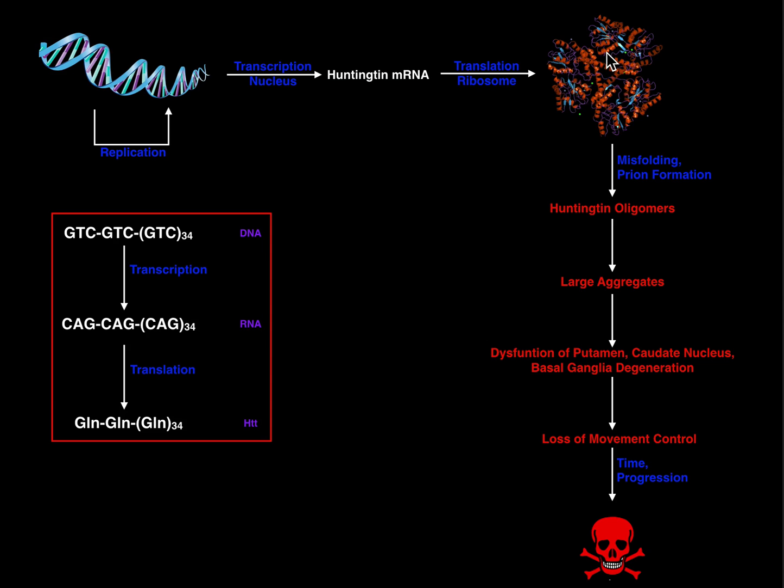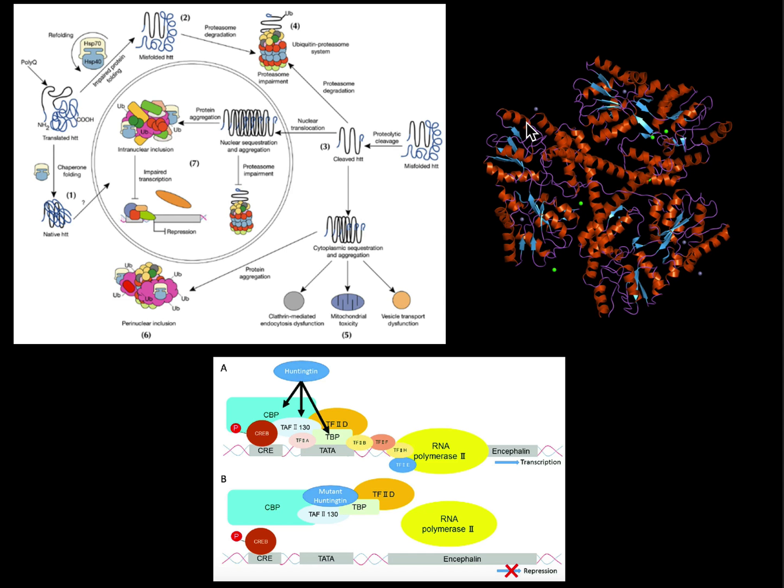All right, so hopefully you understand this basic progression. Now let's talk a little bit about the specifics of how misfolded Huntington will actually propagate the disease, and it really will do it in a few ways. So this misfolded Huntington protein can actually undergo proteolytic cleavage. If it is cleaved, it can be digested and degraded by a proteasome, which is what you want. However...